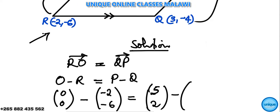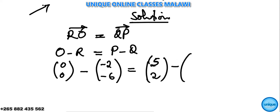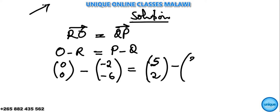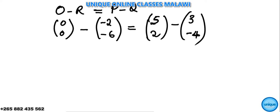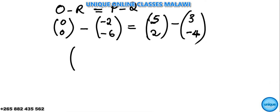Then minus Q, that's 3 down negative 4, so I'm putting here 3 down negative 4, then you close the bracket. Now, next thing we need to do, we are going to remove the brackets. So we have 0 minus minus 2, 0 minus minus 2, and 0 minus minus 6 here.